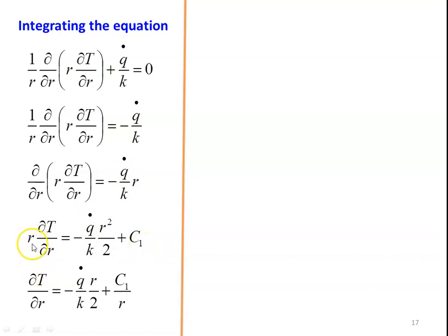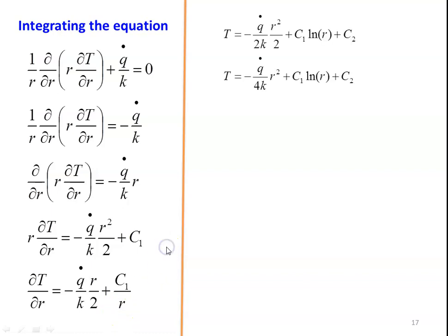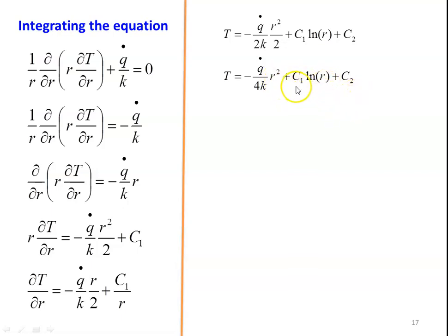Simplifying: dT/dR = −(Q̇/K)·(R/2) + C1/R. Integrating again: T = −(Q̇/2K)·(R²/2) + C1·ln(R) + C2. Rearranging, the general solution is T = −(Q̇/4K)·R² + C1·ln(R) + C2, where C1 and C2 are two constants to be determined from the two boundary conditions.